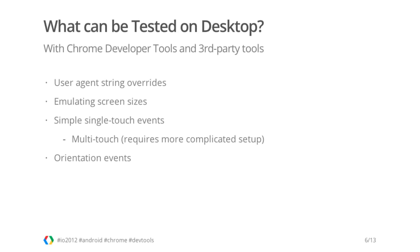What mobile features can be tested using Chrome developer tools and third-party tools on your desktop? Surprisingly, a lot. In recent versions of Google Chrome, you have the ability to override user agent strings with the ones used on mobile platforms. And what's even more important, Chrome developer tools can automatically adjust your window size to the size of the device screen. It's also possible to emulate touch events with your mouse. Multi-touch event simulation is also feasible, although setting it up is more involved. It's awesome that you can develop and test a lion's share of your mobile website functionality without even running an emulator.